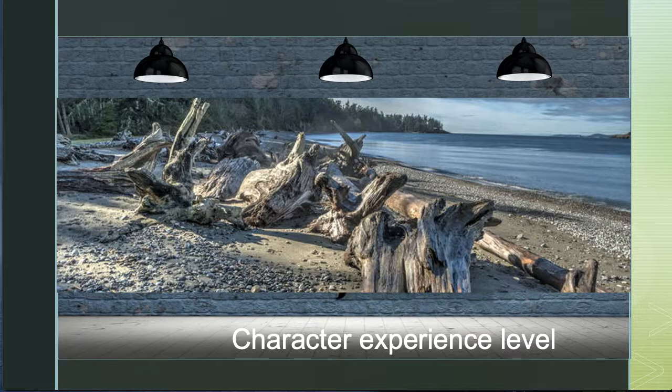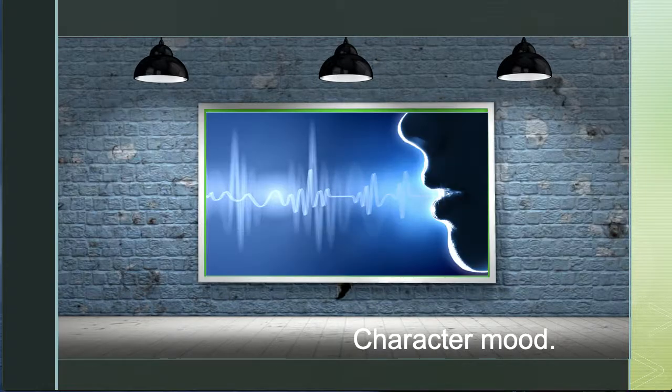Consider the mood of the character and how that might impact the character's environment. When we're happy, we can make a thunderstorm happy. When we're sad, we can make it scary or overwhelming. As a writer, it's a good habit to filter a scene through the character's experience but also their mood, because this impacts the way the reader experiences and sees the setting.